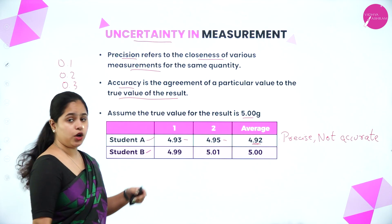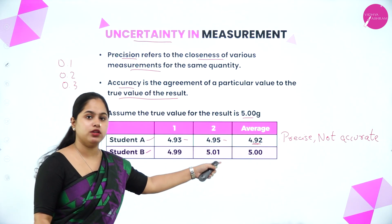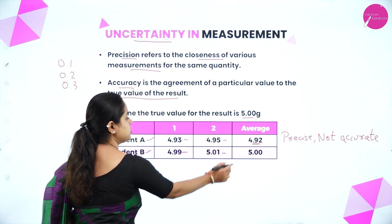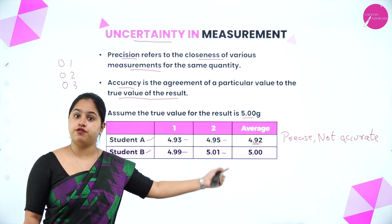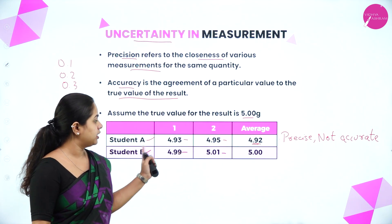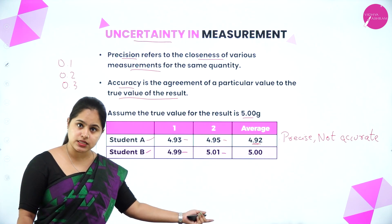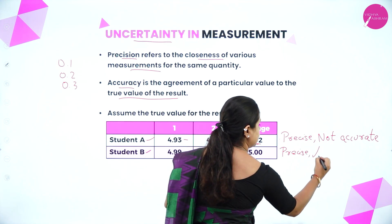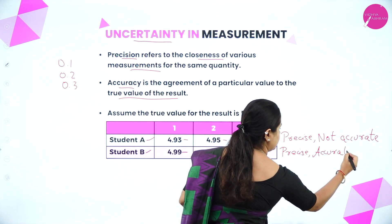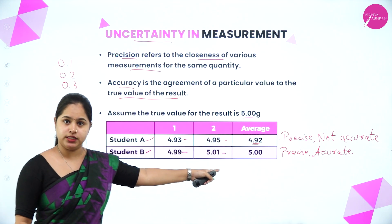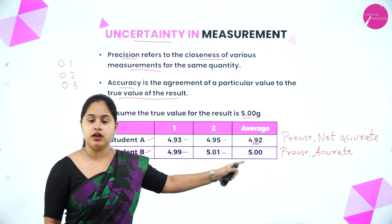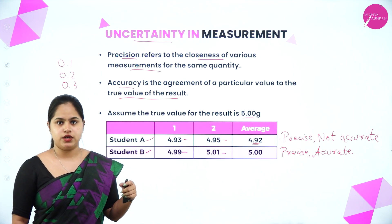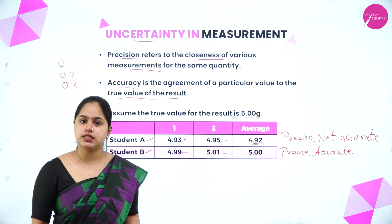Now let's look at Student B. The values obtained were 4.99 and 5.01. The difference between the two values is still 0.02, so these two values are precise. The mean obtained is 5, which is exactly the same as the true value. So the values obtained by Student B are precise as well as accurate. In Student A's case, 4.92 and 5 have a big difference, which is why the values are not accurate. In Student B's case, the mean exactly equals the true value. I hope you understood the difference between precision and accuracy.